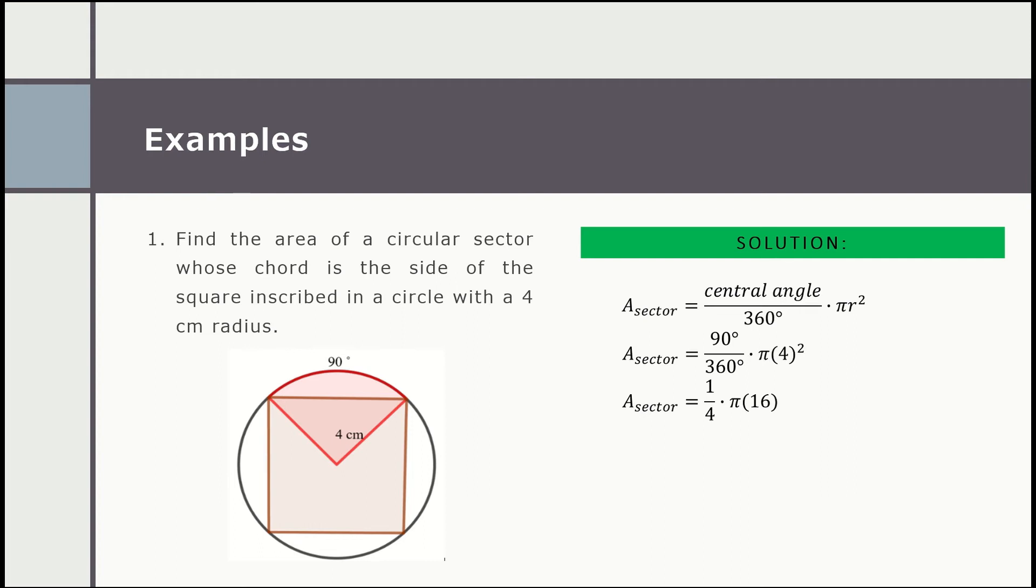π multiplied by 16 is equal to 16π. Then we have 1 over 4, multiplied by 16π. 1 over 4 times 16, and 16 over 4 can be expressed as 4. Then we have 4 multiplied by π.